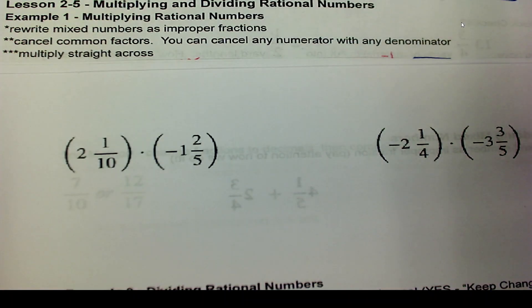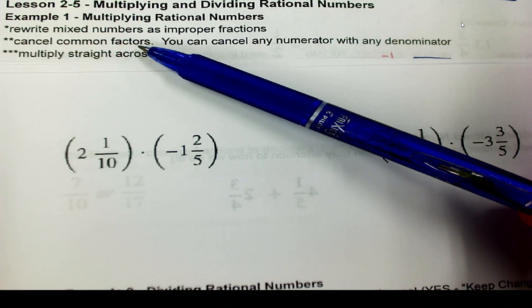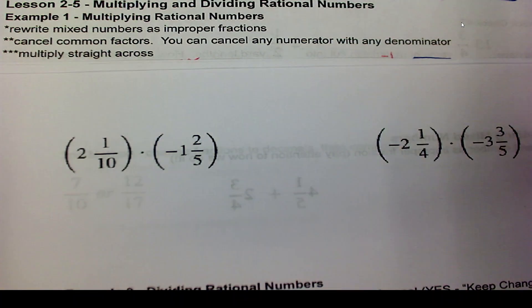turn them into an improper fraction. Then look to see if you can cancel any common factors. That'll help you out so much. And then you can multiply straight across.